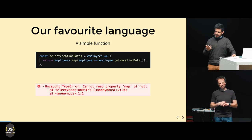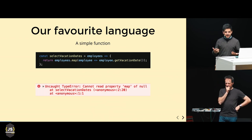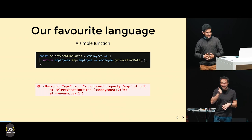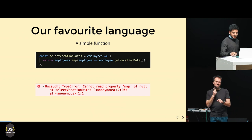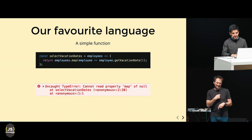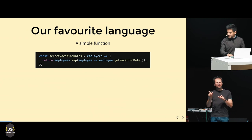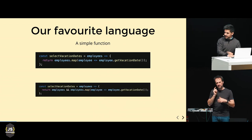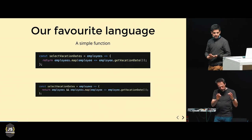At this point, I made what I think most lazy programmers do, which is start adding some defensive checks. So we had this function, and now we're just checking that employees was defined.